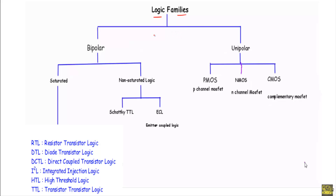Initially, logic families are classified into two types according to the use of transistors. If we use bipolar junction transistors to build a logic family, it will be included in the bipolar logic families. If we use a unipolar transistor like a field effect transistor, it will be included in the unipolar logic family. Unipolar logic families can be further classified into three types.